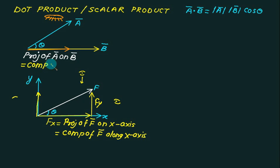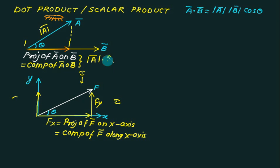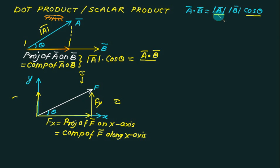The component of a bar on b bar is this length. In the right-angle triangle formed, this length is mod a multiplied by cos theta. So the component equals mod a times cos theta. From the dot product definition, this equals a bar dot b bar divided by mod of b.